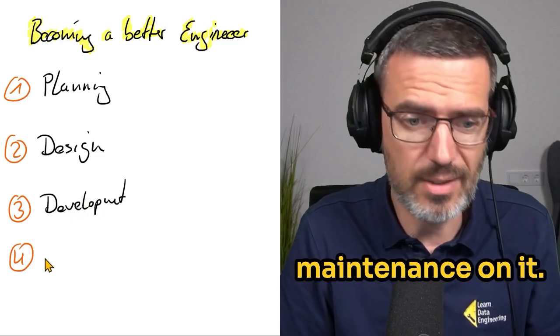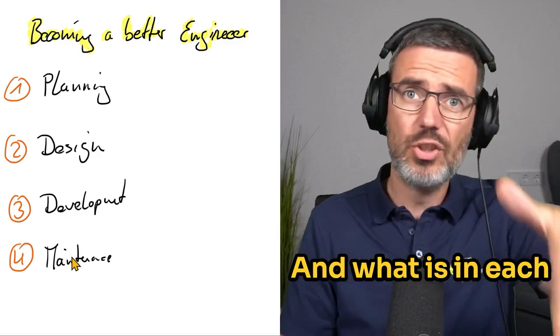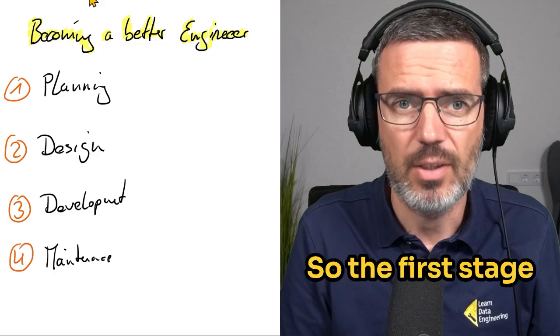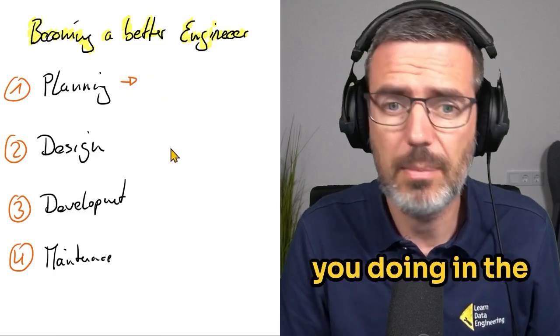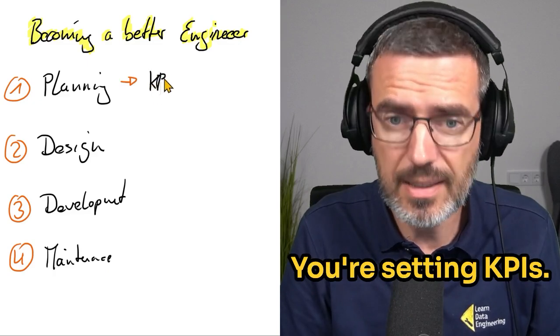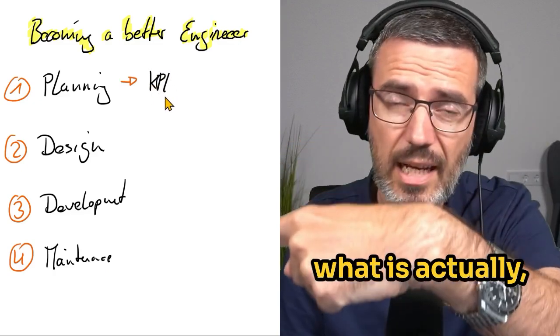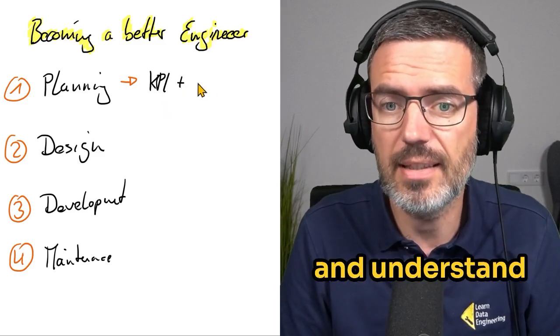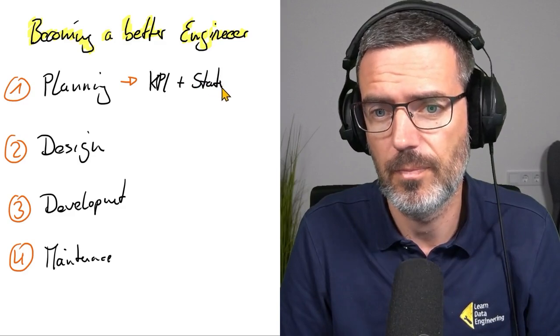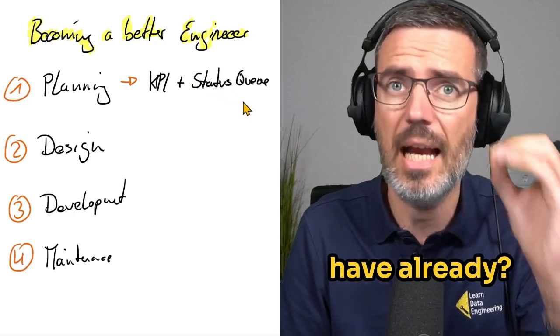Then you're going to do maintenance on it. And what is in each of these stages? So the first stage here, the planning stage: what are you doing in the planning stage? You're setting KPIs, you're looking at what do we want to achieve, set the KPIs and understand the status quo. What do we have already? How does it function? What are the problems?